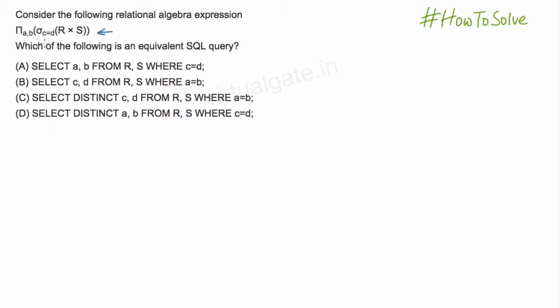So let us first analyze this expression. We have a cross product of two relations R and S and here this is a select operation. So we are selecting over the condition C equal to D. Here we have R cross S and we are selecting tuples or rows on the basis of this condition C equal to D.